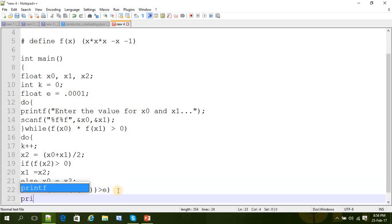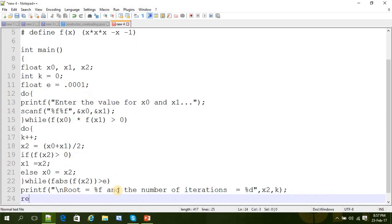And then we are just going to print the value. Root is %f and number of iterations is %d for integer. So root is x2, and number of iterations is k. And return 0.